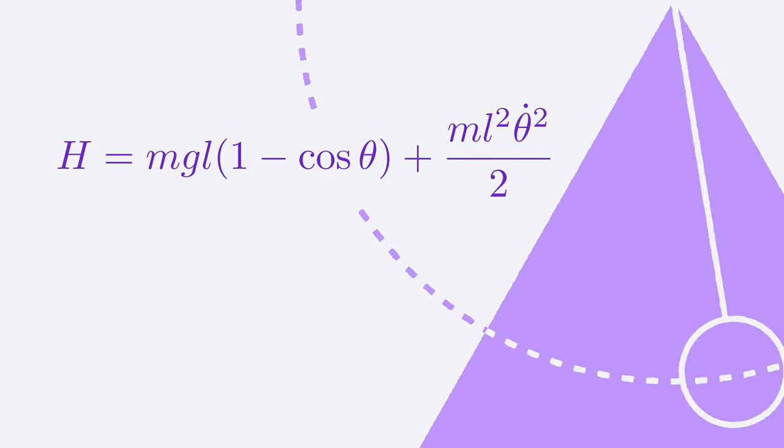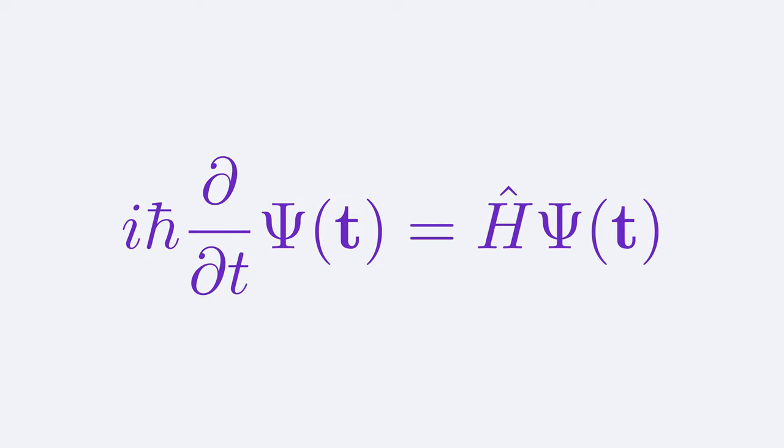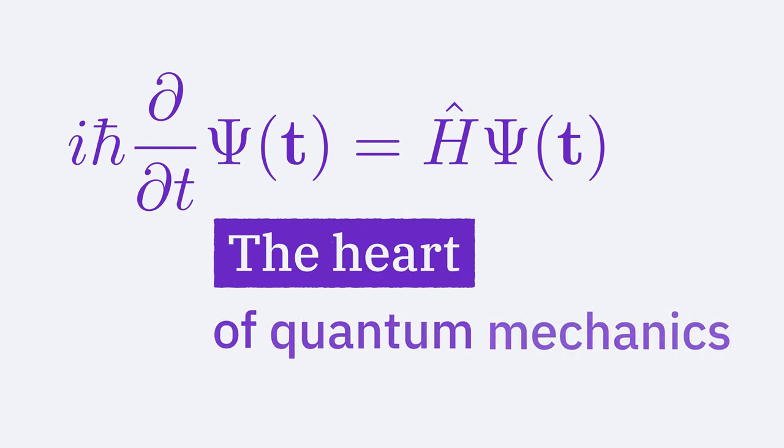In quantum mechanics, knowing the Hamiltonian of your system is very important, because it will allow you to solve the Schrödinger equation – the heart of quantum mechanics.